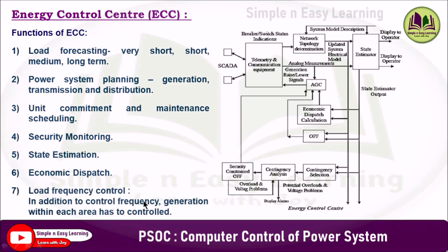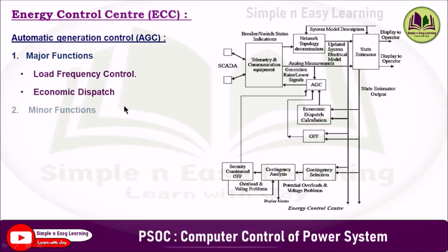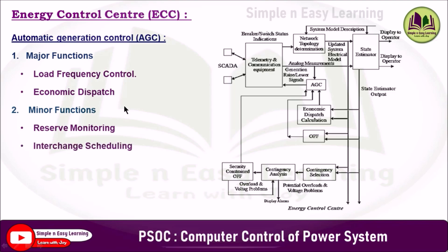In automatic generation control, the major functions include load frequency control and economic dispatch. Minor functions include reserve monitoring, interchange scheduling, and monitoring and recording of functions.